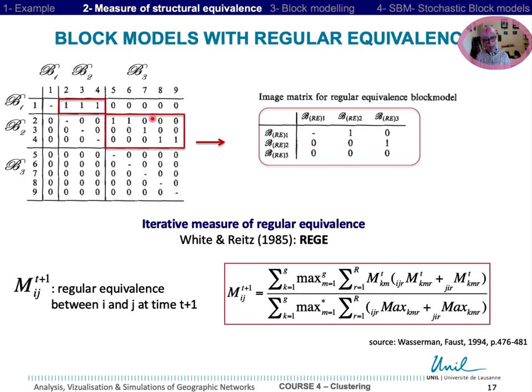I recall that regular equivalence is the less restrictive measure of equivalence. It is sufficient that each member of a block has at least a link to nodes of the other block to assign one between two blocks. It is the case for b2 to b3, here.